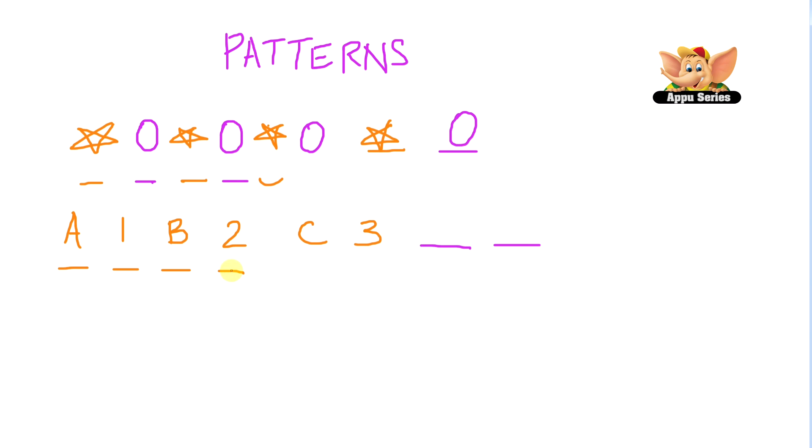What comes next is the third alphabet, C, and the number 3. So what should obviously be next? The fourth alphabet, D, and the number 4. It's important to first understand what is going on in the pattern.